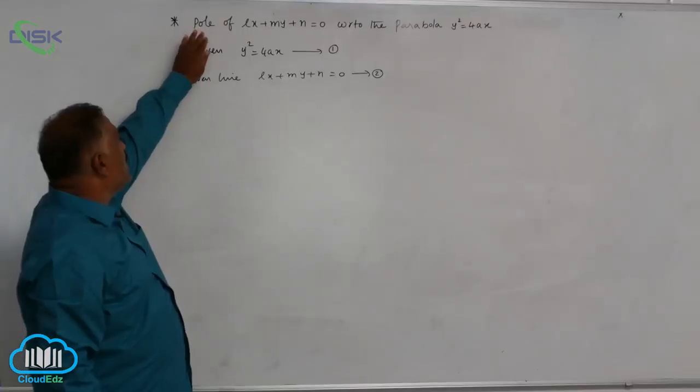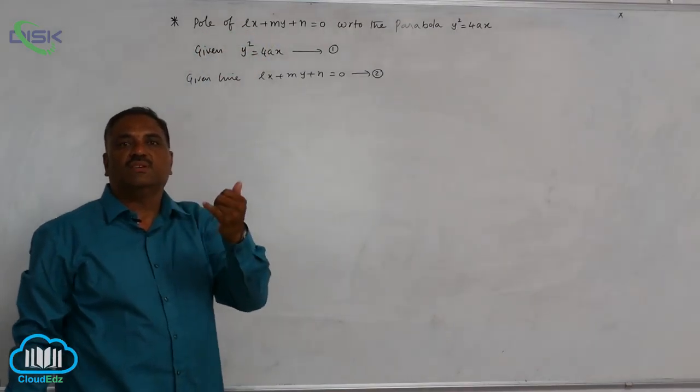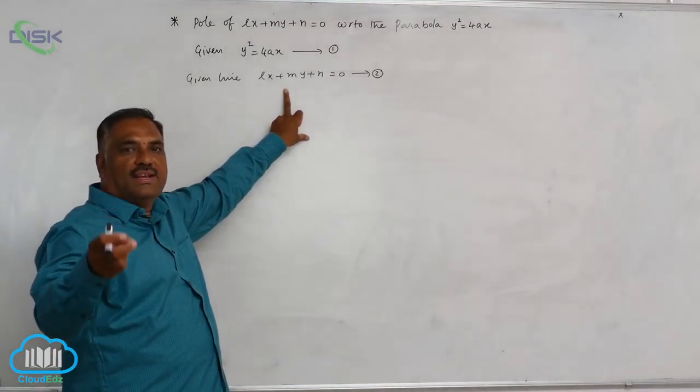We know that if pole of some line means that line itself is a polar. This is the polar means for every polar there exists a pole.